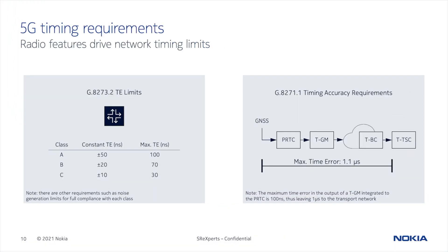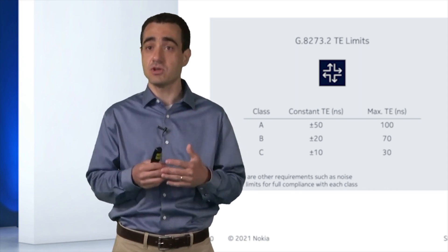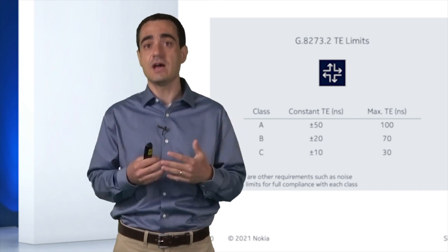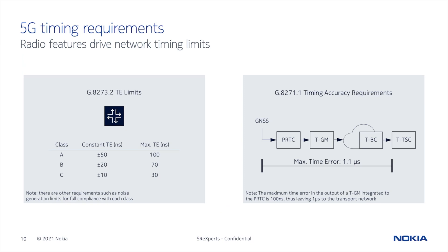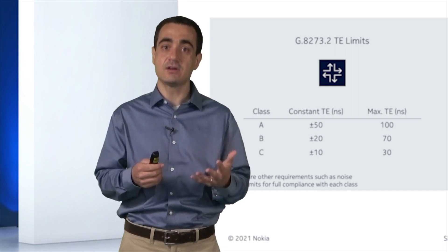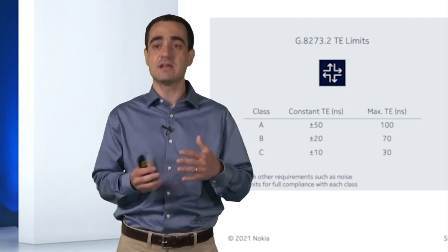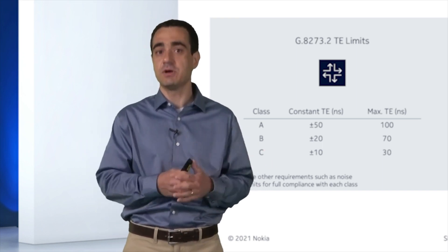This slide shows some of the 5G timing requirements. The main role of timing in a mobile network is to provide mobility across all of the different cells — the different cell towers need to be synchronized for you to be able to move between them. The radio features drive the timing requirements. Looking at the chart on the right, you can see the G8271.1 timing accuracy requirements: from the GNSS to the slave, you have a time error budget, and that maximum time error budget is 1.1 microseconds. This is for the very basic category, and it's important to note that 5G mostly uses TDD spectrum — time division duplex — which means we need to synchronize with time.